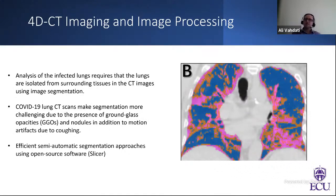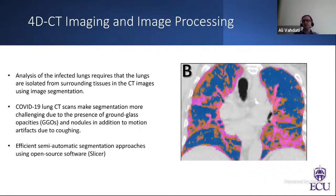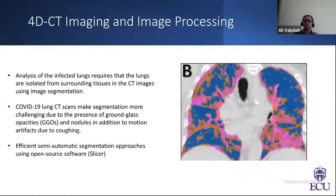Analysis of infected lungs requires that the lungs be isolated from surrounding tissue in CT images using image segmentation. This is an example of a 4D CT image that we segmented to identify ground glass opacities, nodules, consolidation regions, and their locations. Segmenting COVID lungs can be difficult due to motion artifacts — for example if the patient is coughing — and ground glass opacities make segmentation more challenging. We developed an efficient semi-automatic segmentation approach using open-source software Slicer. We also submitted an abstract on these methods to the BMES 2021 Annual Meeting, which was accepted and will be presented in October.